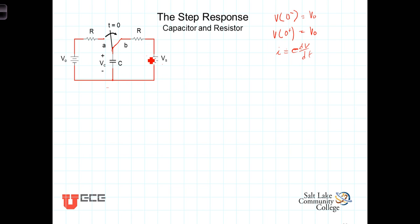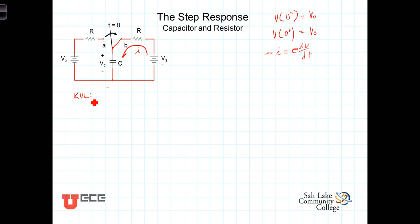To do this, it's convenient to define our current I like that, so that the current is referenced flowing from the plus to the minus reference on our voltage across the capacitor. Recalling that the current flowing in here is equal to C dV/dt, let's now go ahead and write an equation going around and summing the voltage drops.